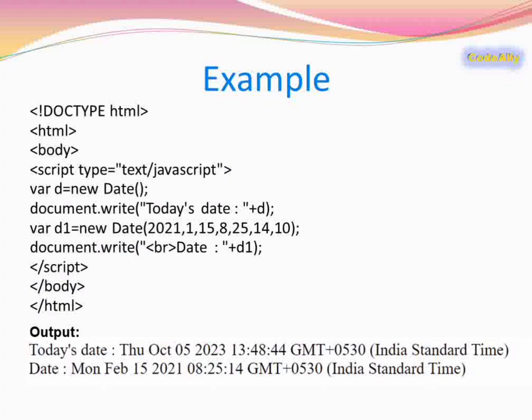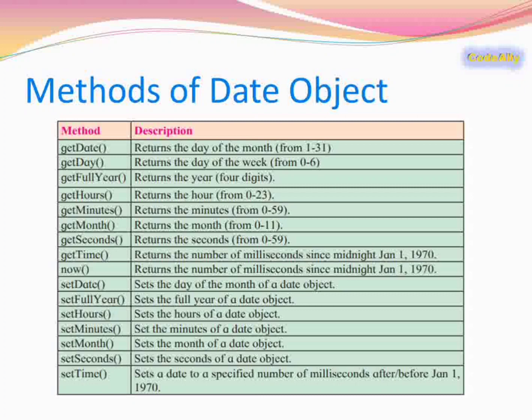In this example we have created a variable d in which we have not passed any value in the Date constructor, so it has considered the current date. But if we pass a value, as done in d1, it will consider that particular date. The date passed was 15 February 2021 and a time was also given, so that particular time has been considered. There are certain methods in the Date object — we will see each of these methods one by one.